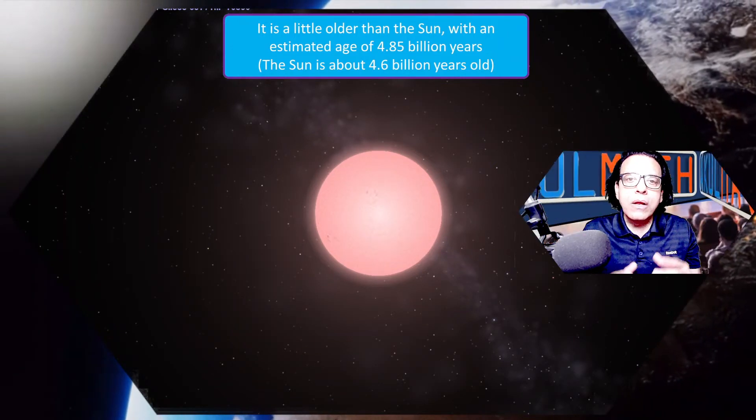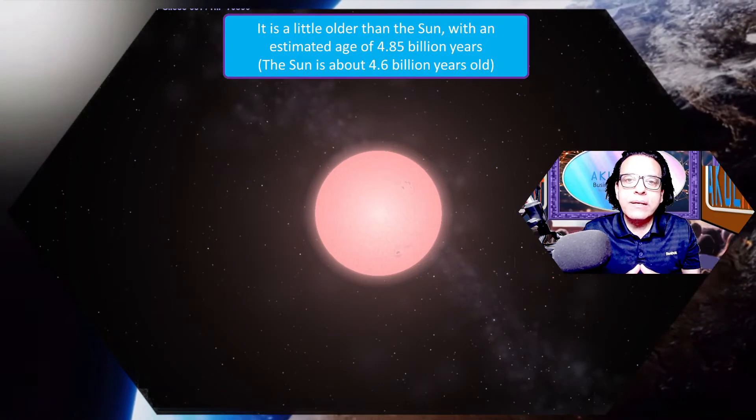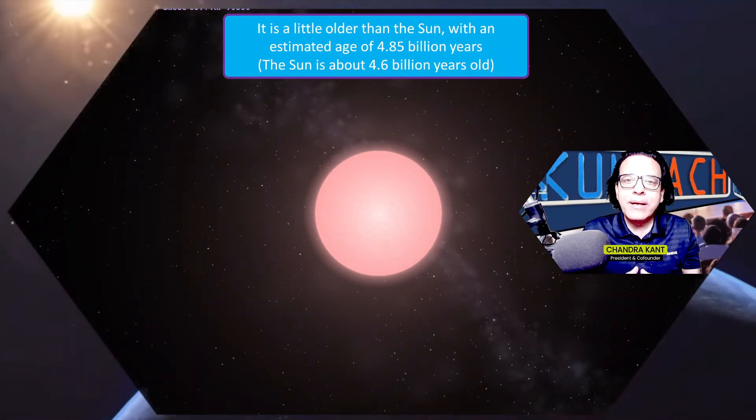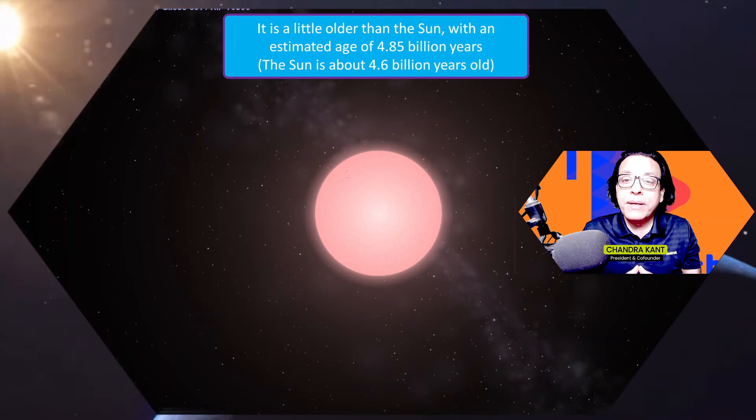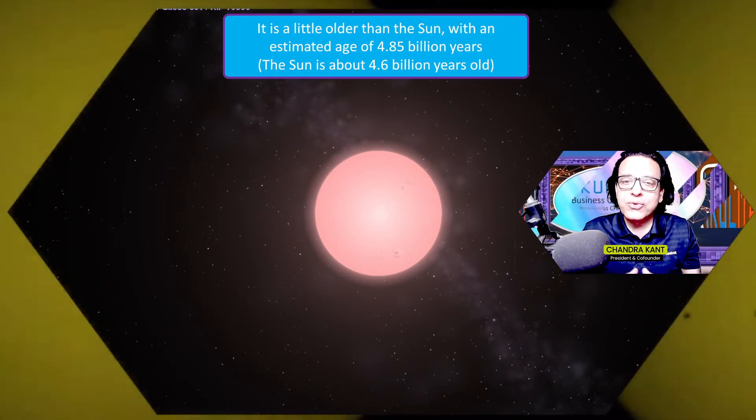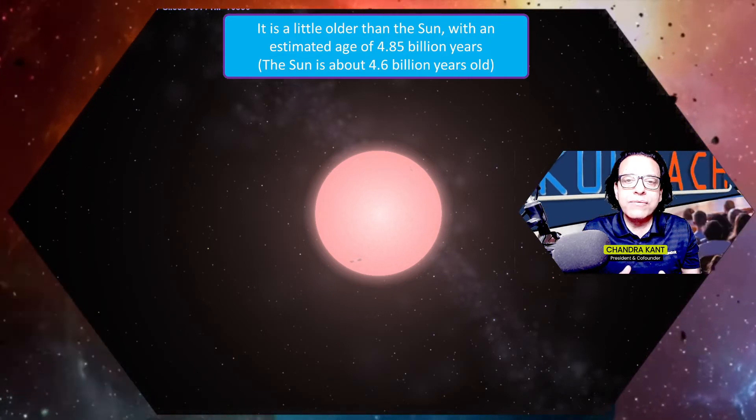Now let's come to the age of Proxima Centauri. It is actually older than the sun. In terms of estimated age, it's about 4.85 billion years, whereas the sun is 4.6 billion years old.